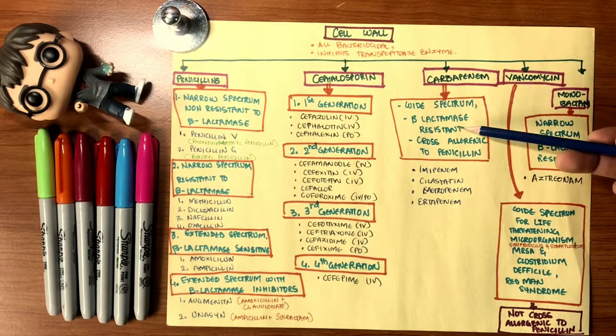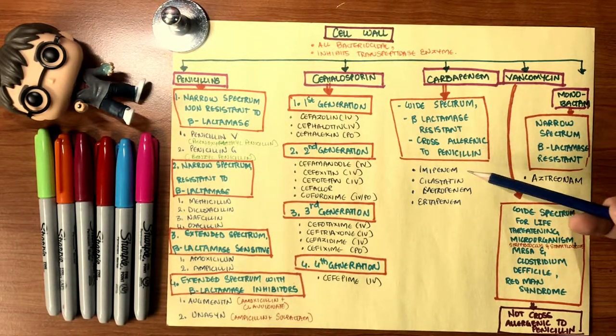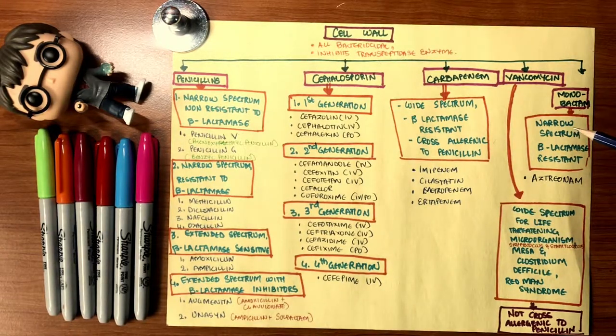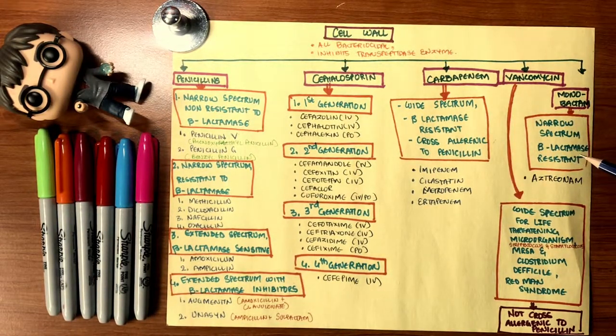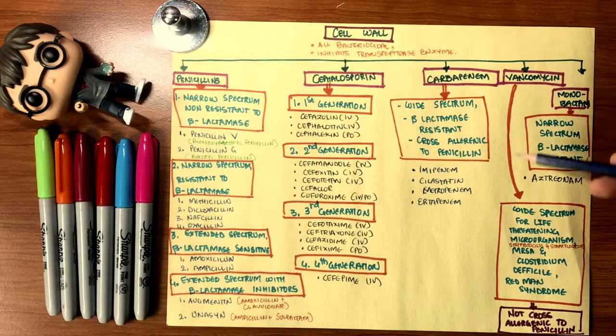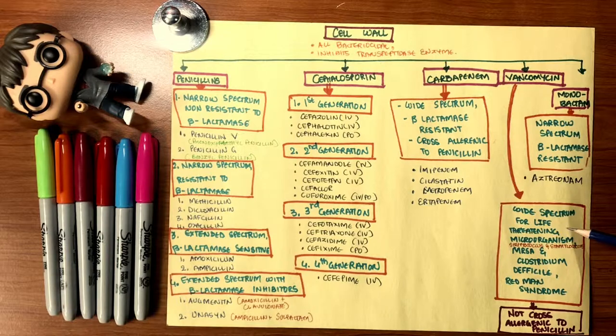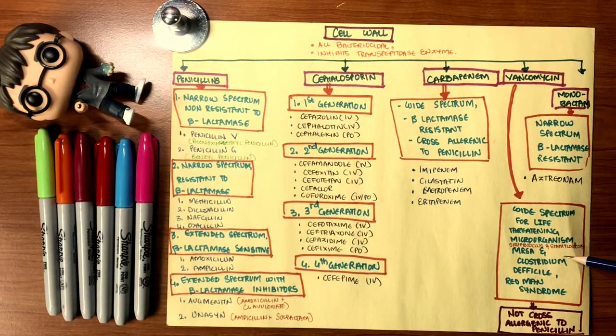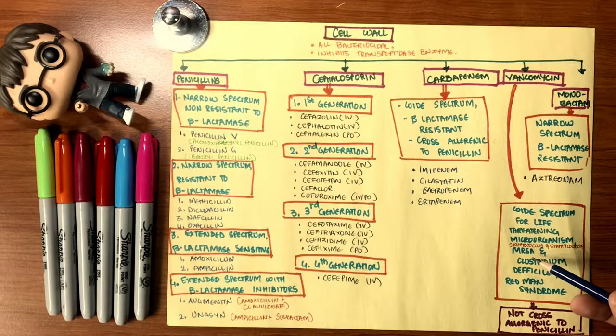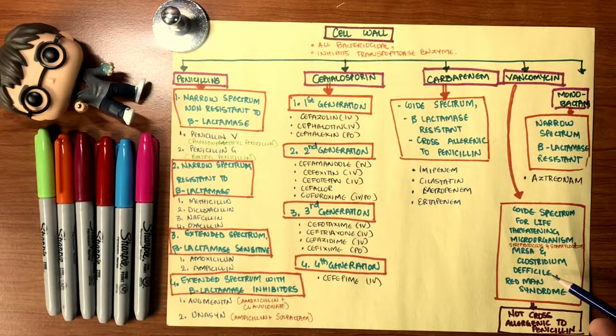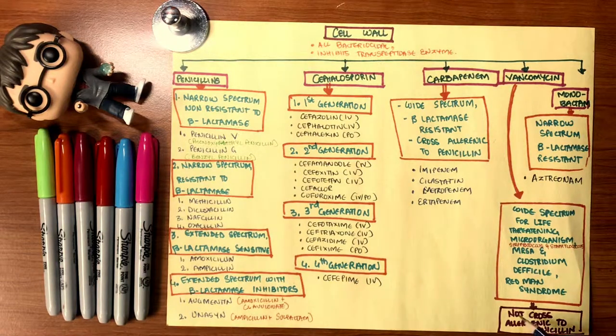Carbapenems are wide spectrum, which is good; beta-lactamase resistant, which is very good; they're cross-allergens to penicillin, which is not good. They include imipenem, meropenem, ertapenem. Monobactams: they're narrow spectrum, which is good when you want to target a very specific type of bacteria; beta-lactamase resistant, again very good. It includes aztreonam. Vancomycin is cell wall destructing but it is not a beta-lactam, therefore it can be classified on its own as a wide spectrum for life-threatening infections such as MRSA, which is methicillin-resistant Staphylococcus aureus infections, or Clostridium difficile. In the side effects, it may cause red man syndrome as it may increase the flushing. It does not have a cross-allergenic to penicillin.